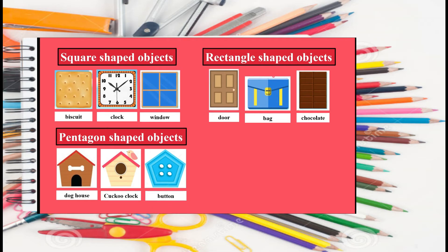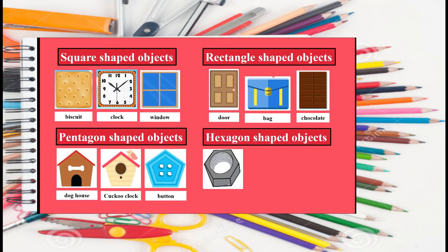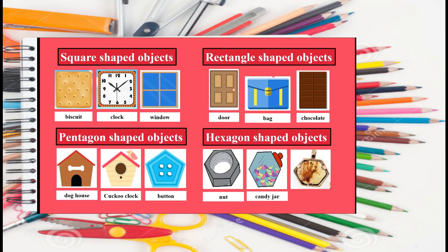Now, let's see the examples of hexagon shaped things. What is this? It's a nut. And what's this? It's a candy jar. What's this? It's a pendant.